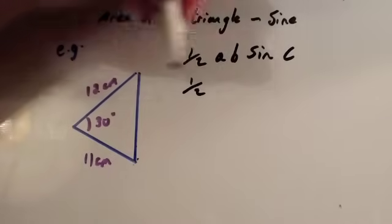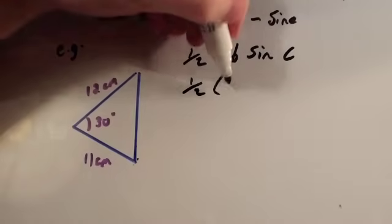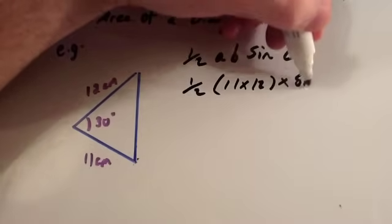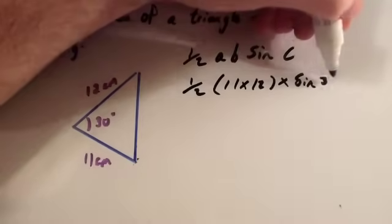So it's going to be a half a times b, so that's a half of 11 times 12, times the sine of C, which is 30.